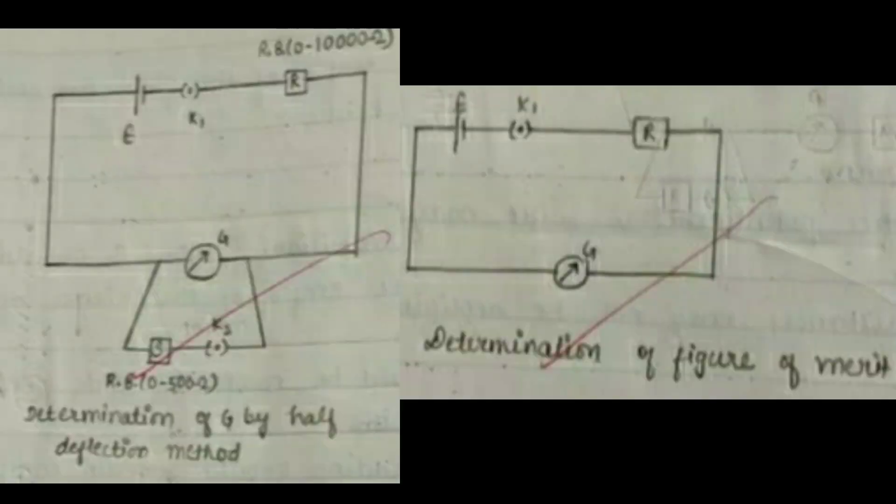This image shows the circuit diagram that has to be made for performing this practical. The first circuit diagram is for the determination of G by half deflection method and second is for the determination of the figure of merit. For the first one we use the resistance of 0 to 10,000 ohms and for the second one the resistance that is used is 0 to 500 ohms.